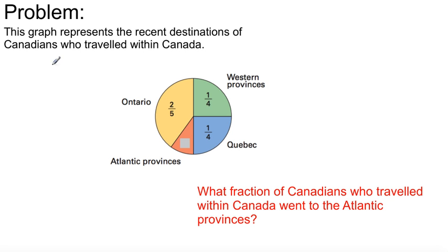Let's take a look directly from the example in the textbook. The problem is: this graph represents destinations of Canadians who traveled within Canada. We have two-fifths Ontario, one-fourth from Western provinces, and a quarter going to Quebec.